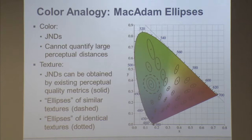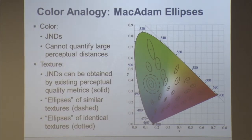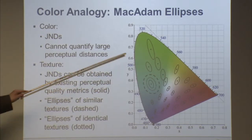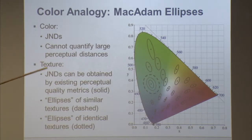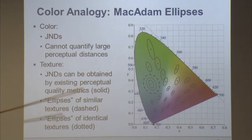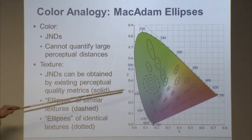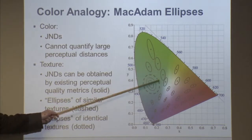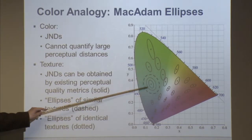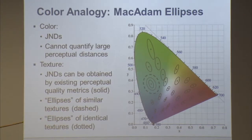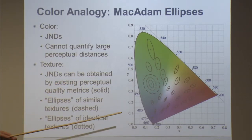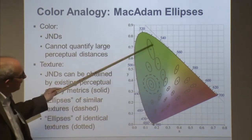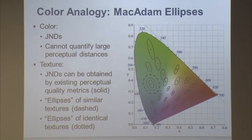This is not surprising if we look at color, which is much better understood. We have the MacAdam ellipses — a visualization of all indistinguishable colors at one intensity level, representing the perceptually lossless case. Then there is another ellipse for identical textures, and one for similar textures. Even in color, for long distances between colors — comparing red and green, or green and blue — geometric distances in perceptually uniform spaces like LAB and LUV don't mean anything. The same thing happens with texture, and it's much harder.